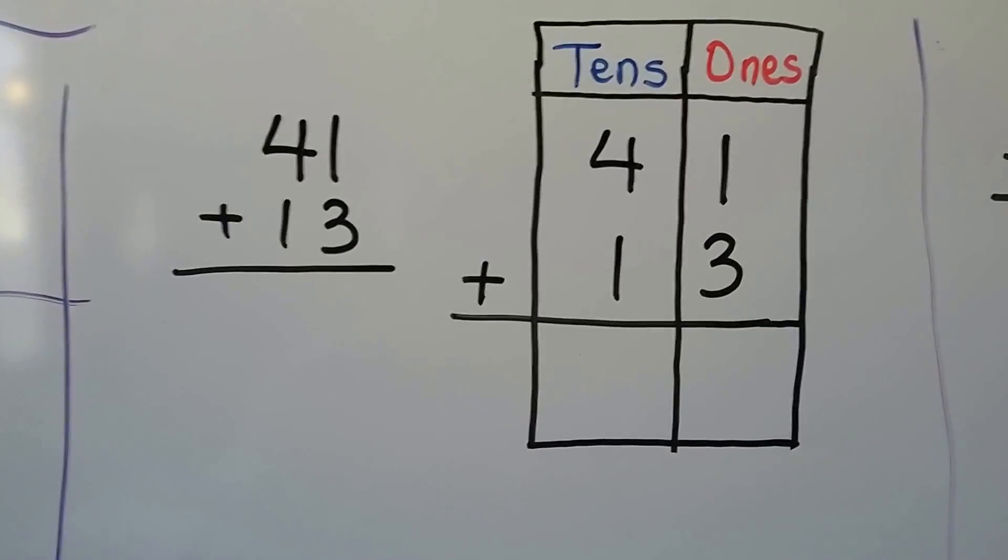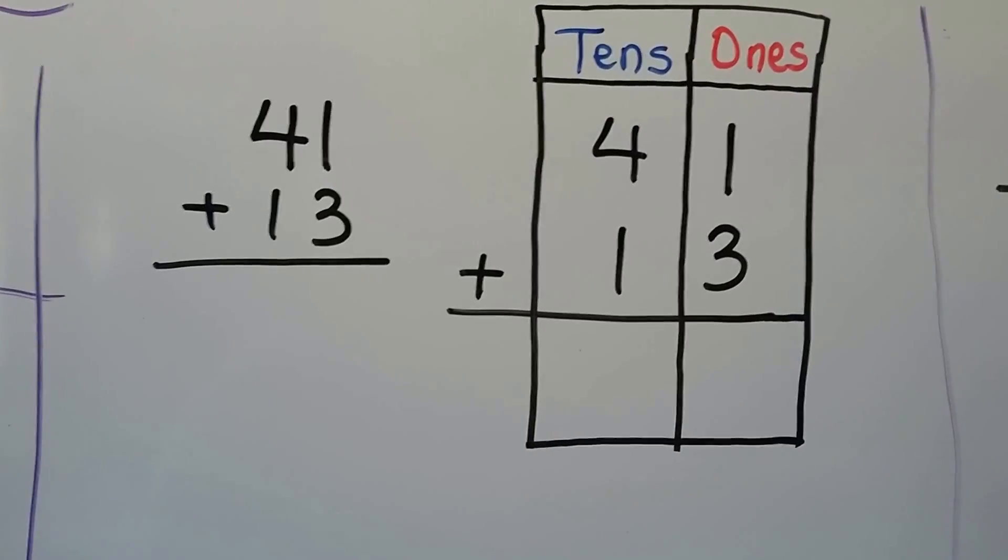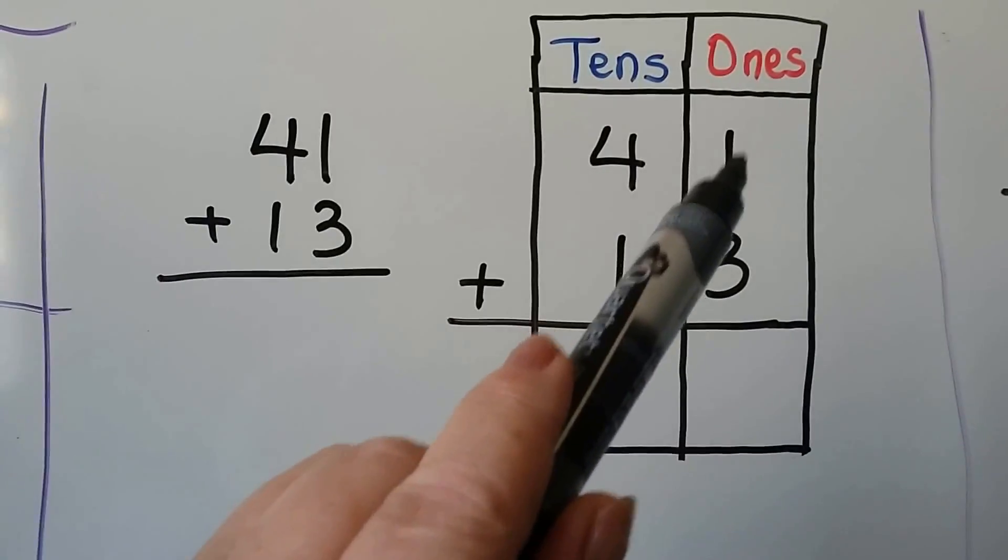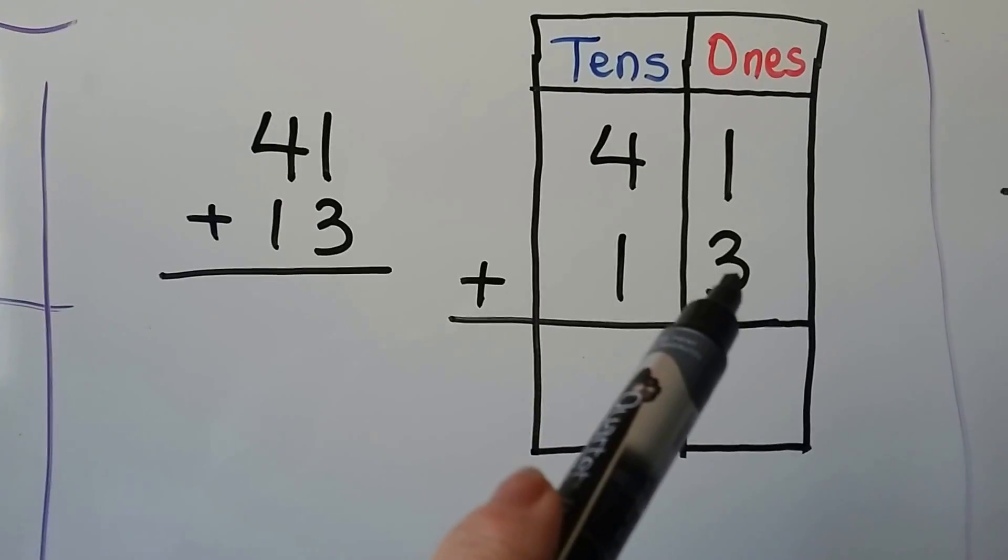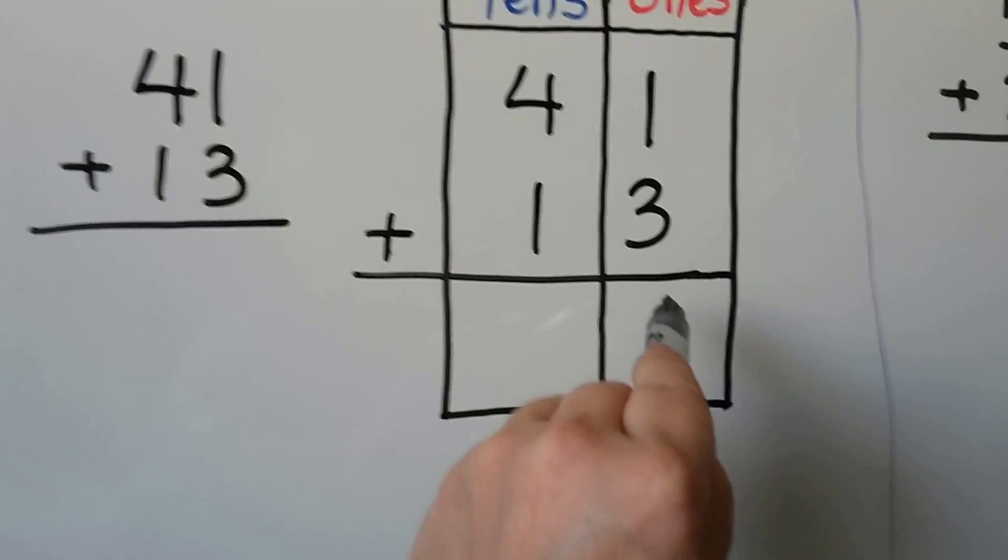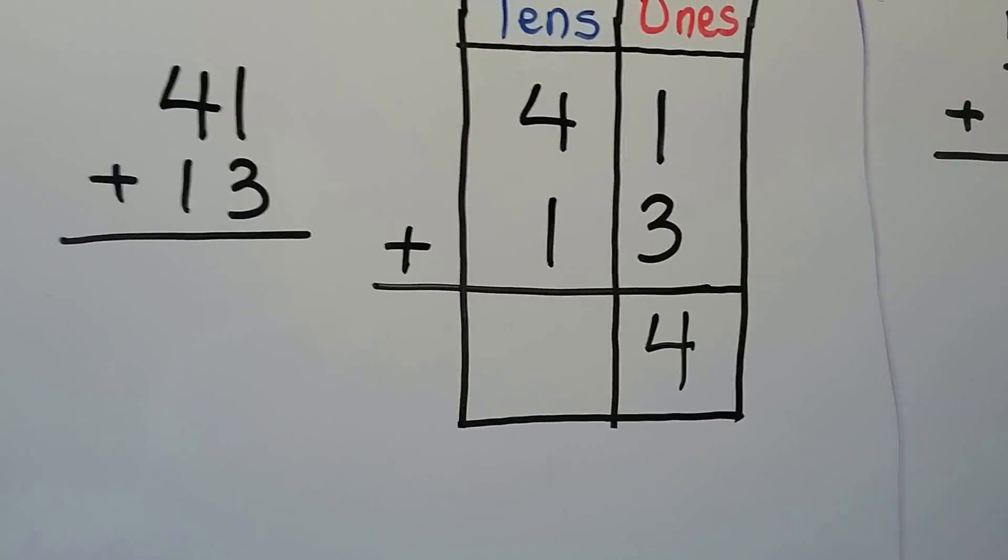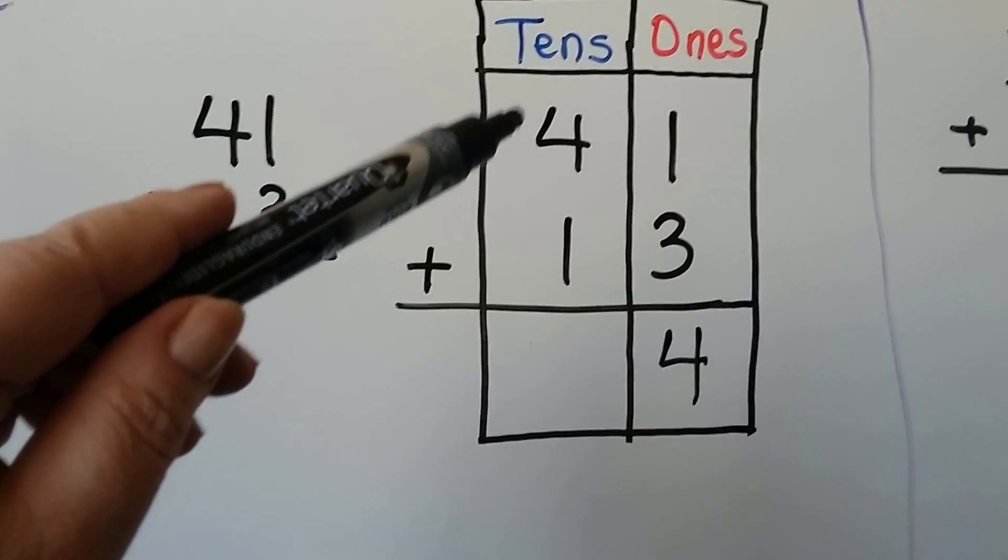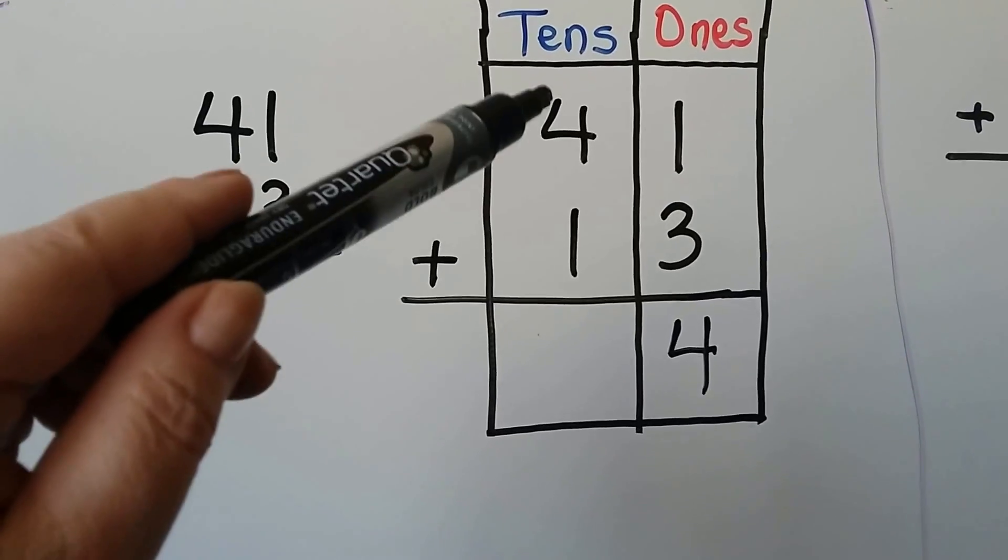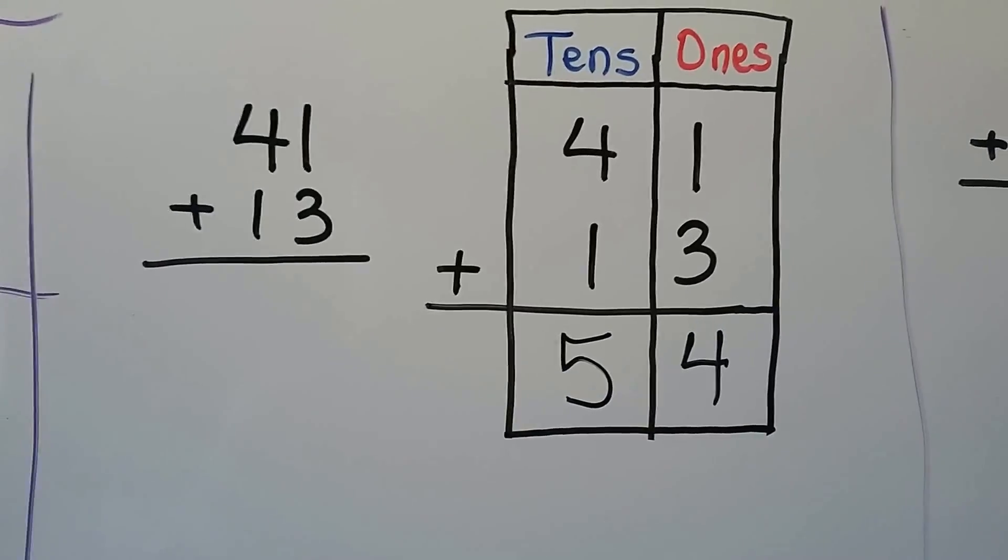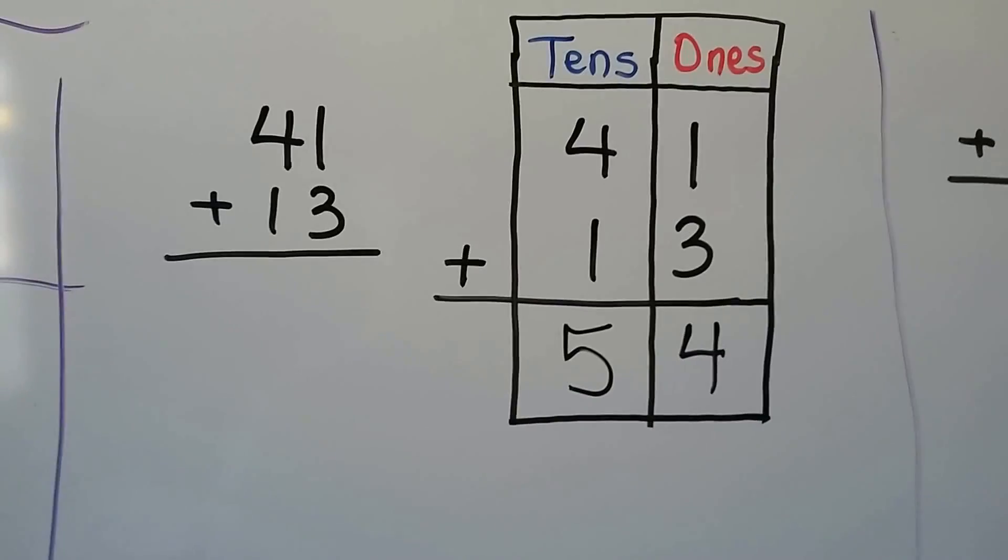Let's try it again. We have 41 plus 13. We add the ones together first. We have a 1 plus a 3. Start with the larger addend 3 and add on 1: 3, 4. So we have a 4 in the ones place. Then we add the numbers in the tens place. We have a 4 plus a 1. That's 4 and 1 more is 5. So we know that 41 plus 13 has a sum of 54.